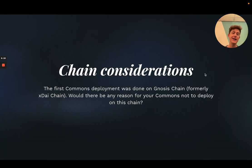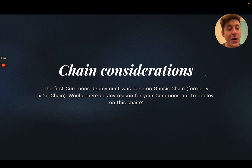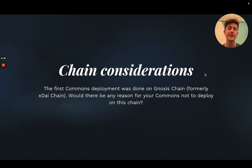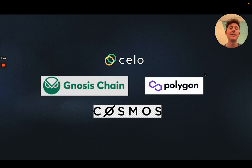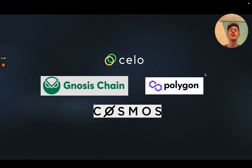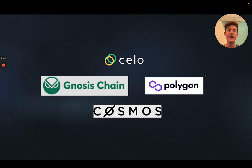On the question of which chain we would use — any reason not to use Gnosis chain — I don't have a deep exploration into the technical considerations of this chain yet, but we would want to do a more thorough investigation before making a commitment. We'd love for this movement to be multi-chain. If it starts first on Gnosis, we'd love to also see it move to Celo, Polygon, and Cosmos. We've got a lot of ReFi activity happening there.